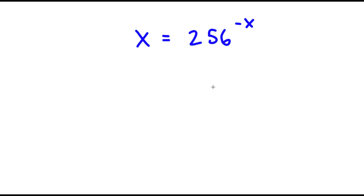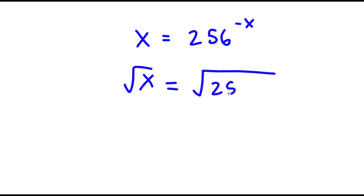In this problem I have x is equal to 256 to the power of negative x. To solve this I'm going to start by taking the square root on both sides, so now I have the square root of x is equal to the square root of 256 to the power of negative x.